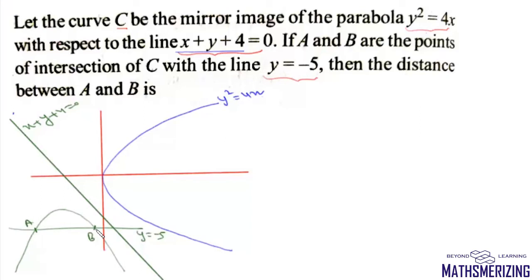What we will do in this question is, rather than taking a reflection of the parabola, we will take the reflection of the line y=-5 about x+y+4=0. Because in this question we do not need to find A and B individually — we just need to find the distance between A and B, and that distance won't change. So we will take the reflection of this line about x+y+4=0.